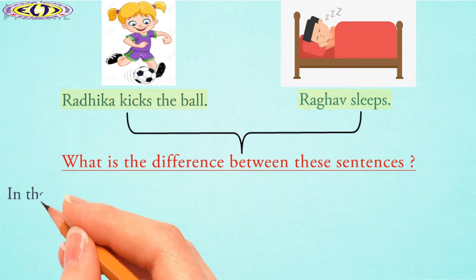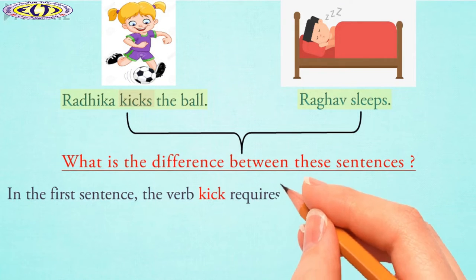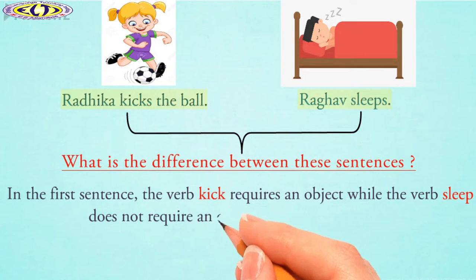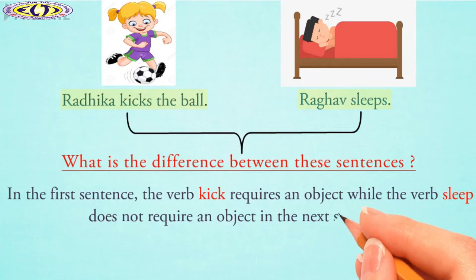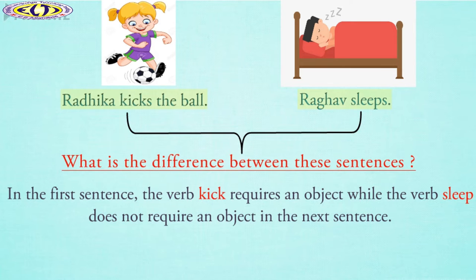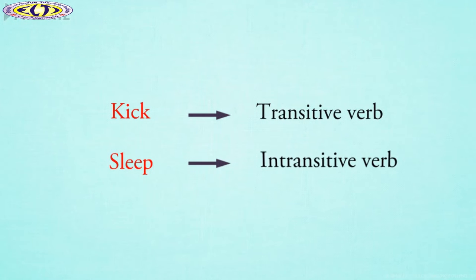In the first sentence, the verb 'kick' requires an object, while the verb 'sleep' does not require an object in the next sentence. It is so because without taking an object, the verb 'kick' cannot make a complete meaning, while the verb 'sleep' expresses a complete sense independently. Here, we can classify the verb 'kick' and 'sleep' as transitive verb and intransitive verb respectively.